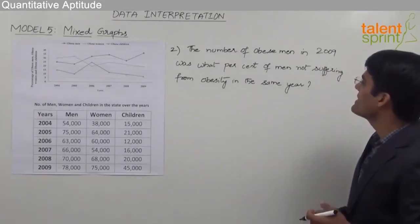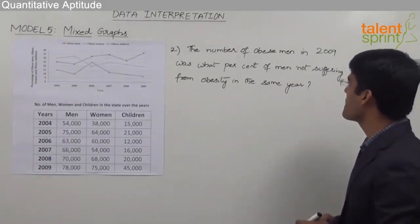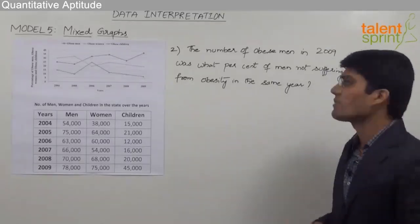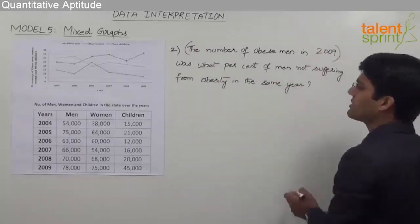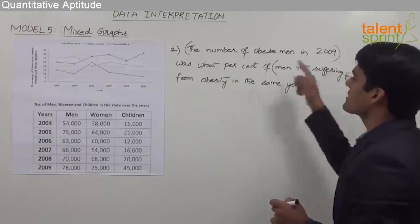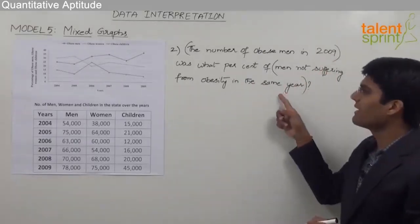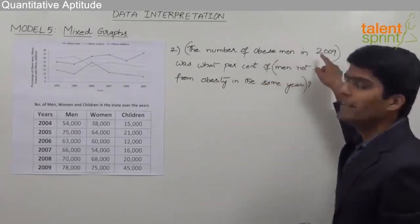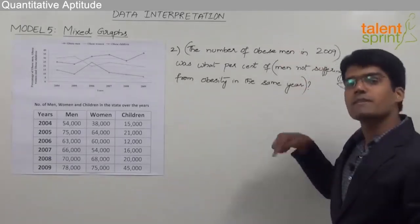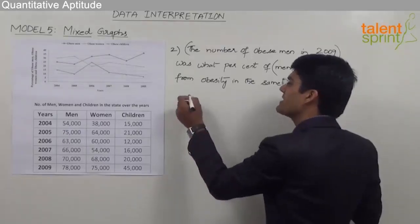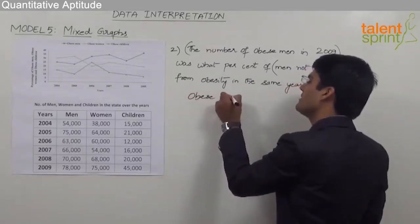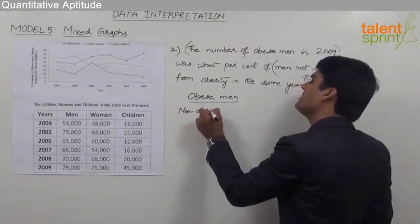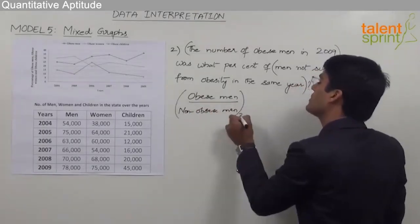The second question is: the number of obese men in 2009 was what percent of men not suffering from obesity in the same year? This is in the form of 'X is what percent of Y?' where X is obese men in 2009 and Y is men not suffering from obesity in 2009. The formula is X divided by Y, multiplied by 100.